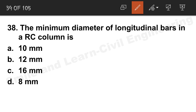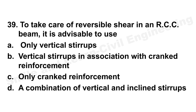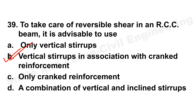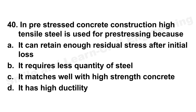Question 38: Minimum diameter of longitudinal bars in an RC column. Please go through IS 456:2000 thoroughly for last-minute revision. Option B is correct — 12 mm. Question 39: To take care of reversible shear in an RCC beam, we need to provide both vertical stirrups in association with cranked reinforcement. Option B is the correct answer.